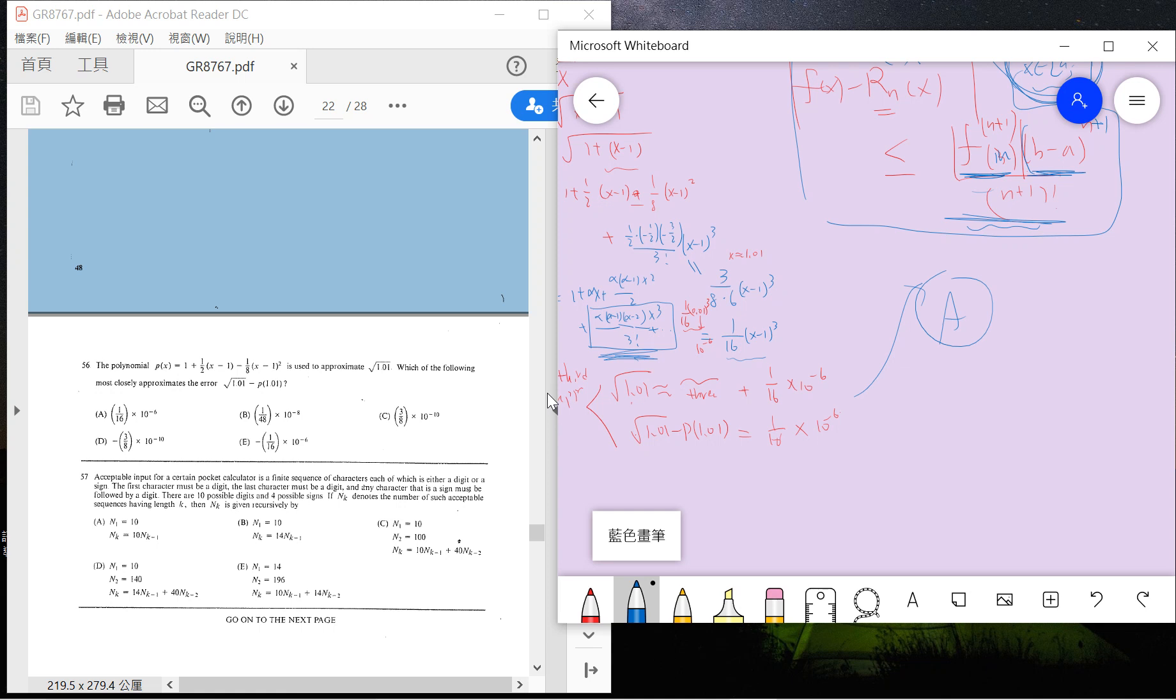But the problem is, the error is positive or negative, right? Because this formula usually only tells you the absolute value of the error. It does not tell you that the error is positive or negative. But actually since this sequence is alternating...